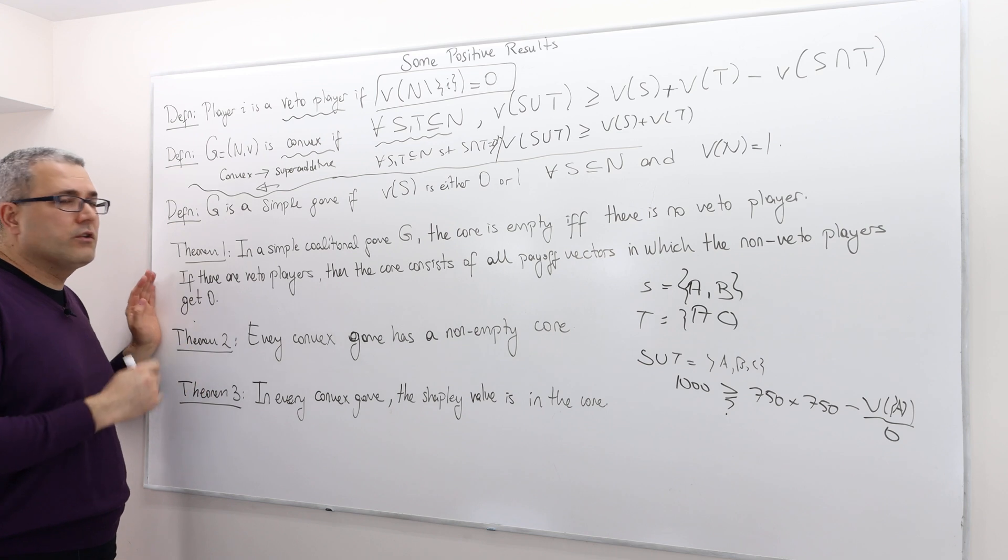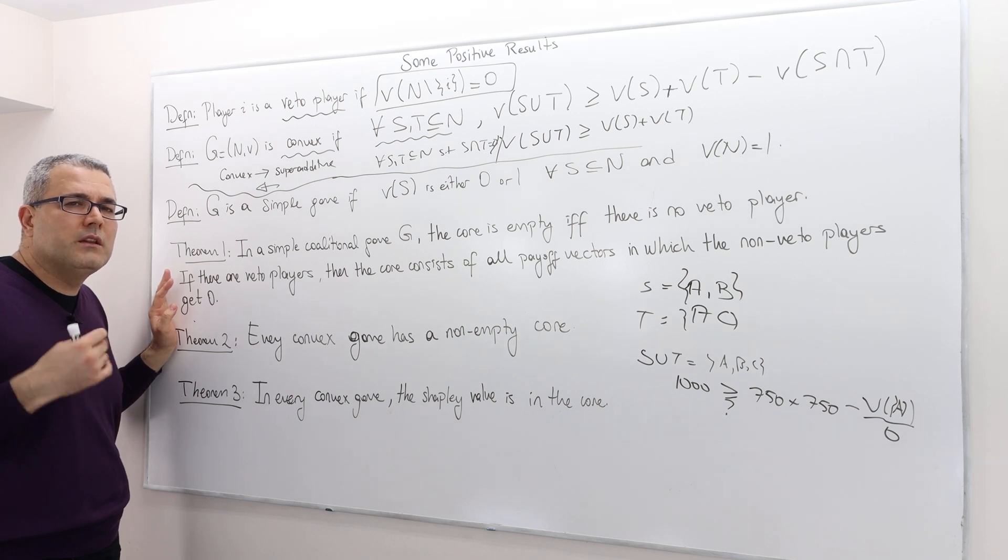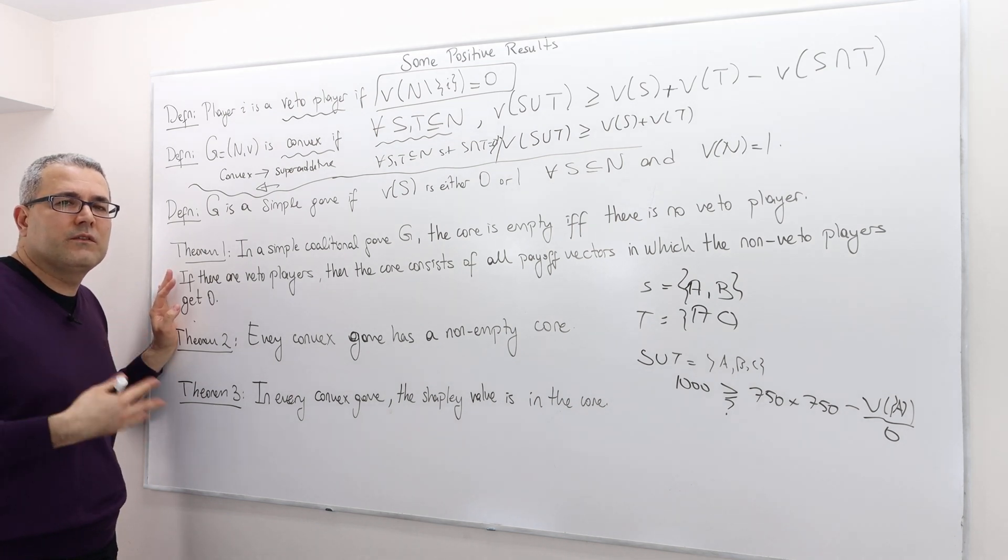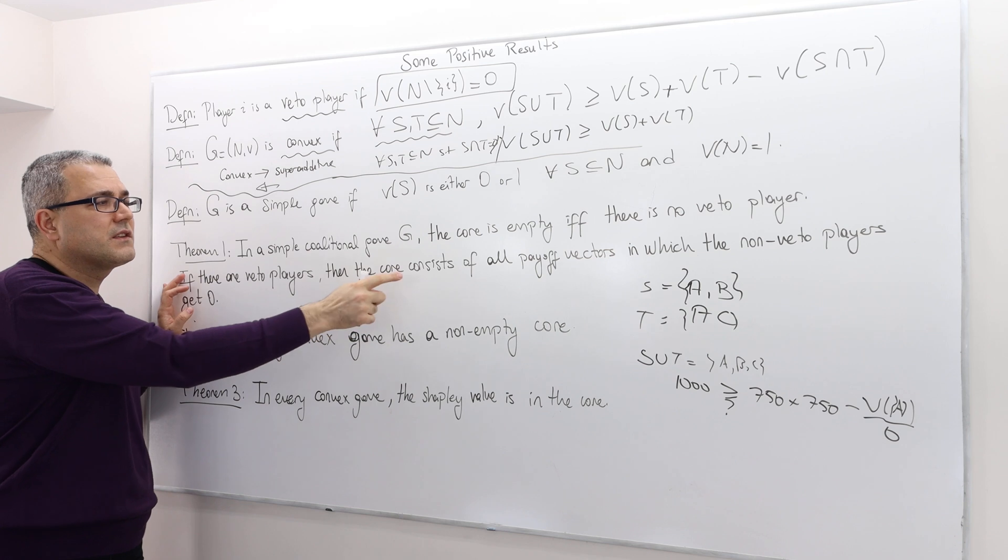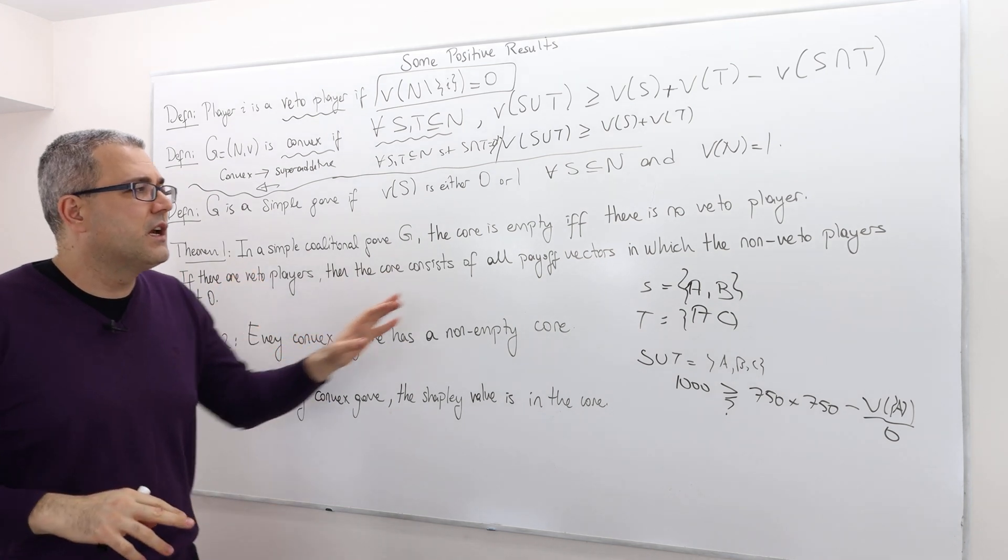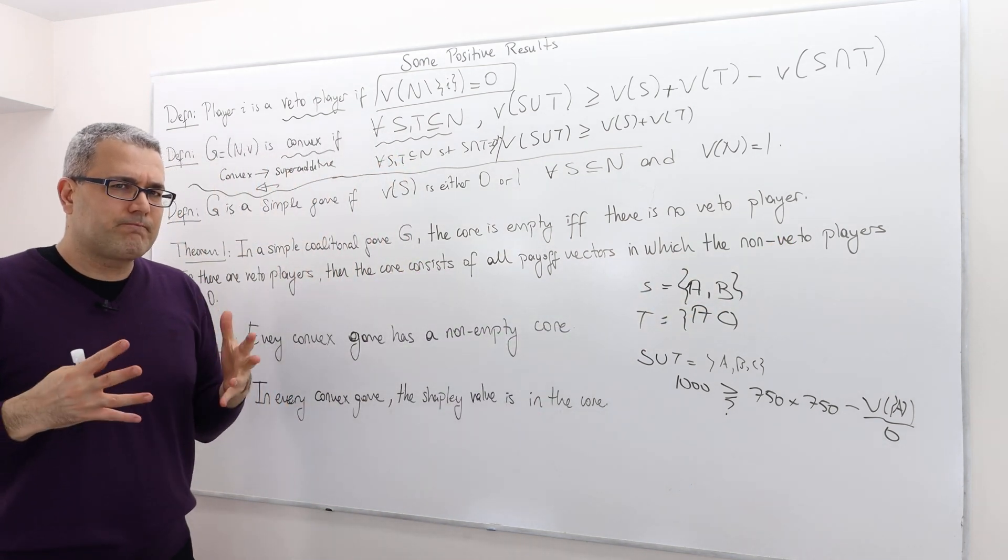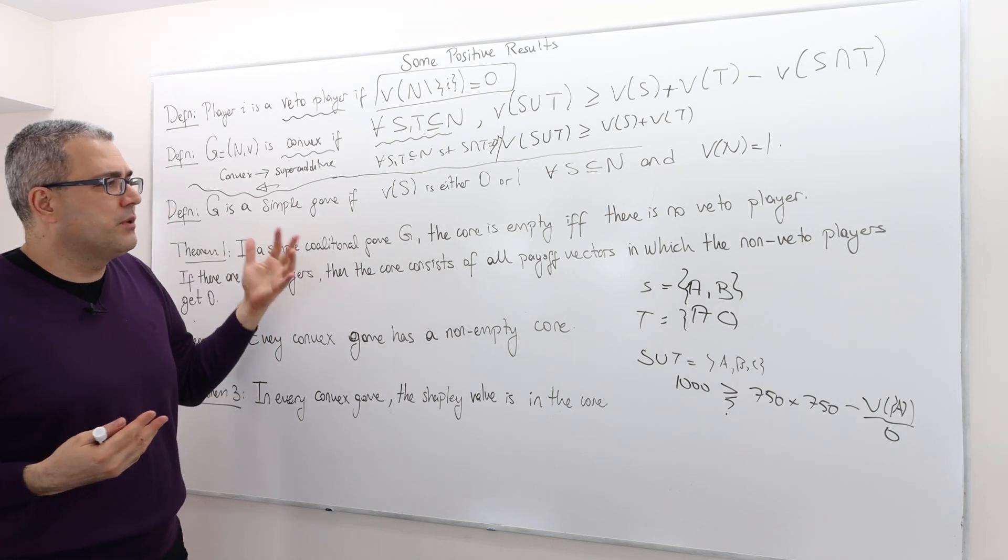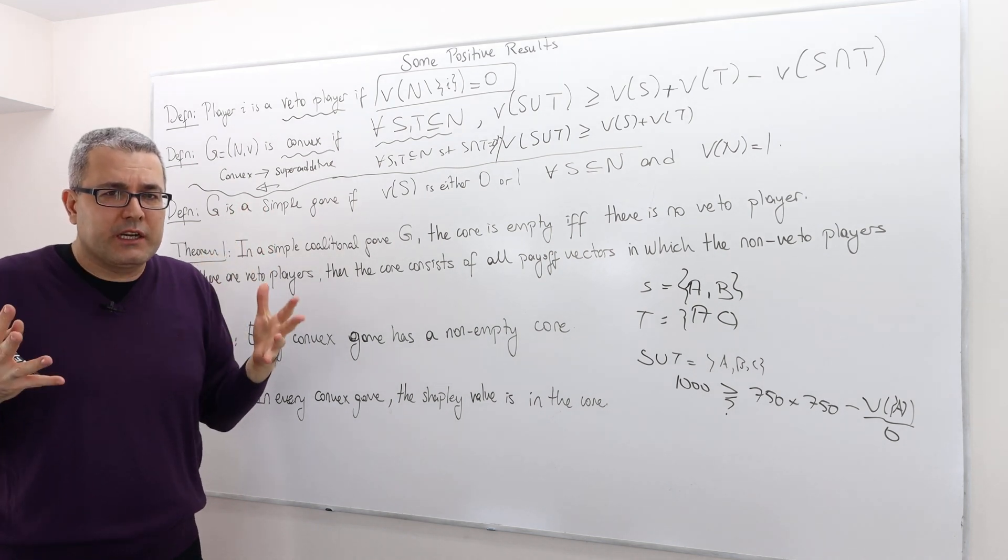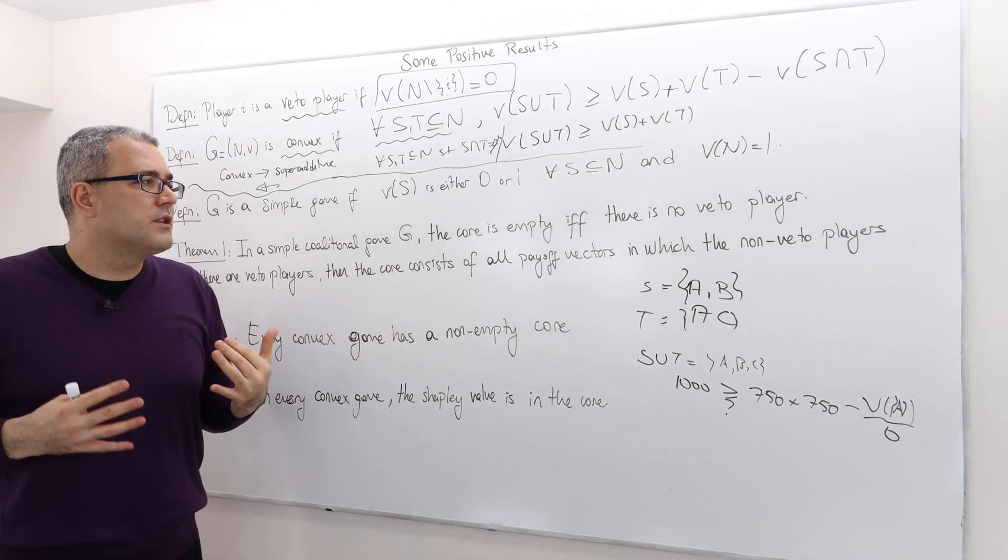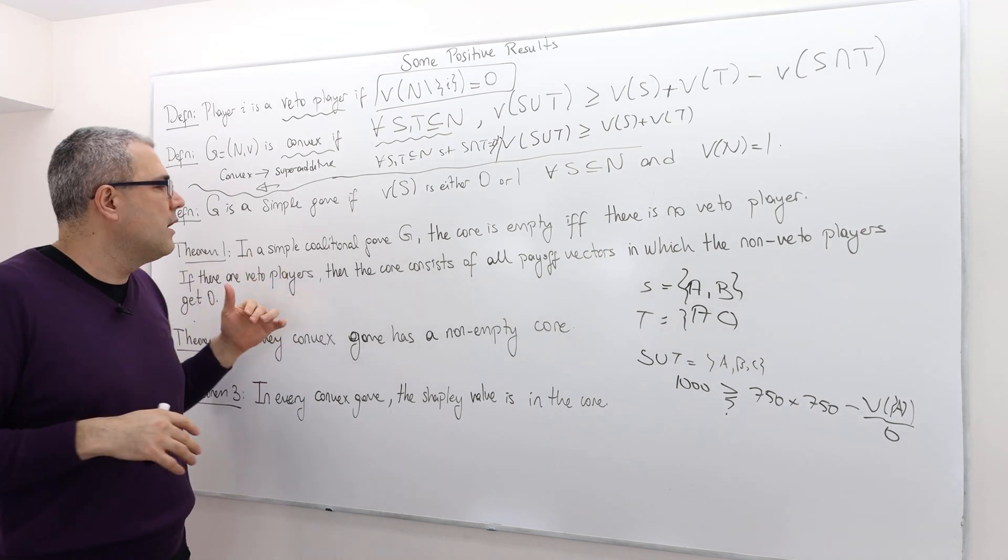Well, what if there are veto players? For example, one political party is huge and you cannot win majority without the sort of participation of this party. Well, if veto players exist, well, then the core consists of all payoff vectors in which the non-veto players get 0. Huh. What does that say? That says, remember, the veto players are very critical, guys, because if you exclude them, the payoff to be shared by the remaining players is going to be 0. So therefore, if there are some veto players, maybe one, maybe two, maybe more than that, well, the thing is the core is going to, I mean, there's going to be some payoff vectors in the core.